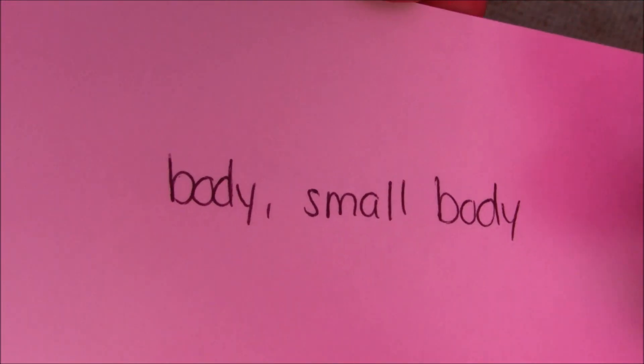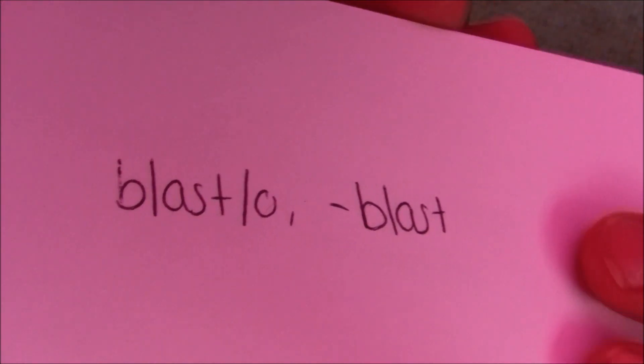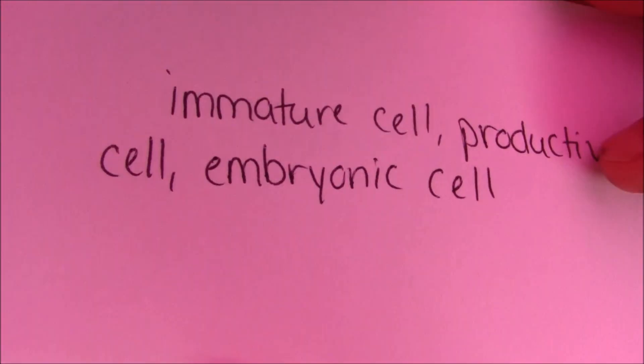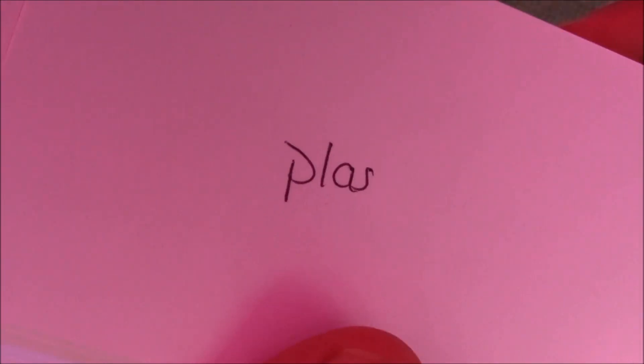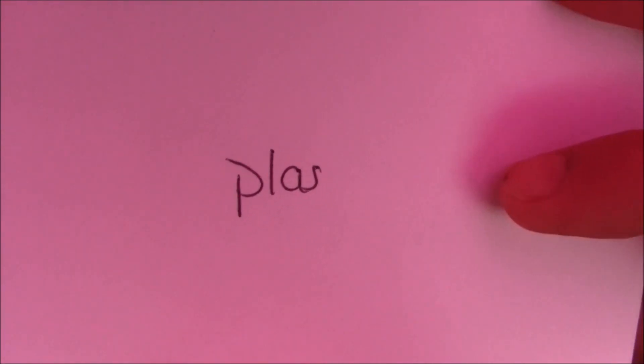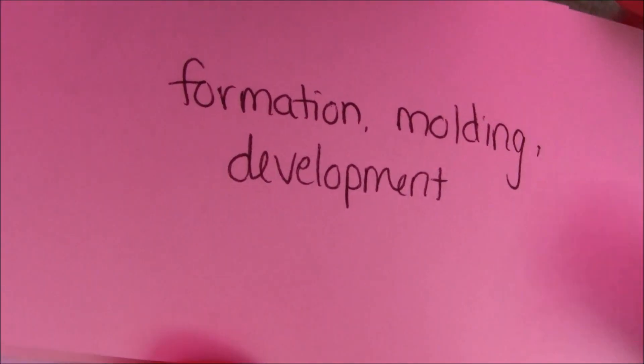Somato — what does that mean? That means body. Blasto — what does that mean? That means immature cell, productive cell, embryonic cell. Geno — what does that mean? That means origin, formation. Phago — what does that mean? That means eat, ingest. These are nursing and medical terms. I am under a pink umbrella because it's raining outside, but it's good lighting. Plasia meaning formation, molding, development.